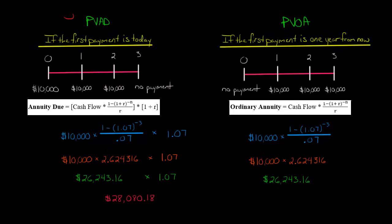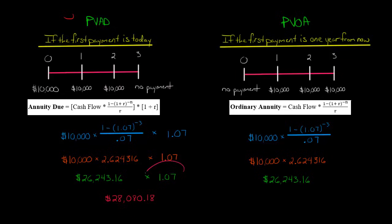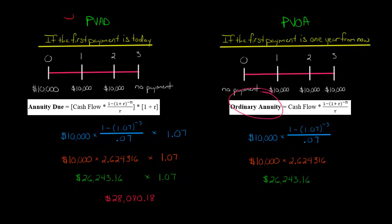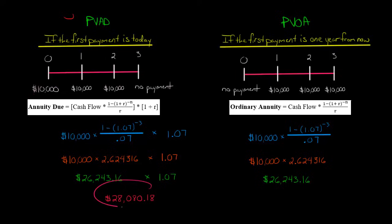When we do the annuity due, it's basically this whole component — $26,243.16 — which is the same as the present value of the ordinary annuity. Then at the end we multiply that by 1.07, and that gives us the present value of the annuity due. So the present value of the ordinary annuity is $26,243.16, and the present value of the annuity due is $28,080.18.